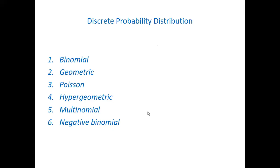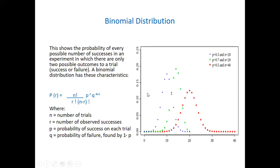The binomial distribution shows the probability of every possible number of successes in an experiment. When we say experiment, you should remember you are trying to collect data - like somebody tossing a coin is performing an experiment. It shows the probability of every possible number of successes in an experiment in which there are only two possible outcomes: success or failure.